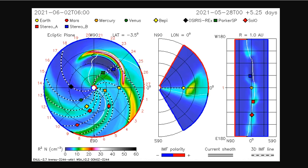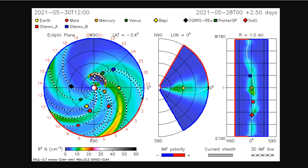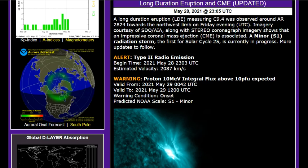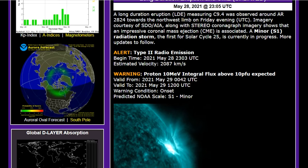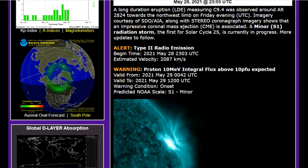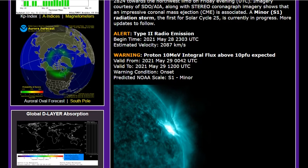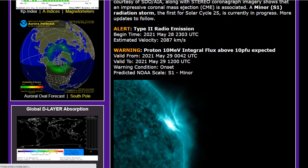A long duration eruption has emanated from our sun. It's true. A long duration eruption LDE measuring C 9.4 was observed around AR 2824 towards the northwest limb on Friday evening. Imagery is courtesy of SDO AIA. Along the stereo chronograph imagery shows that an impressive coronal mass ejection or CME is associated with this flare at C 9.4.